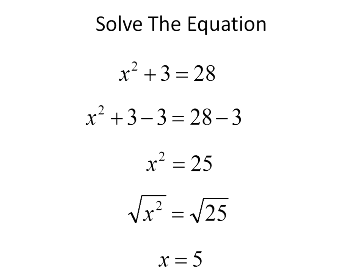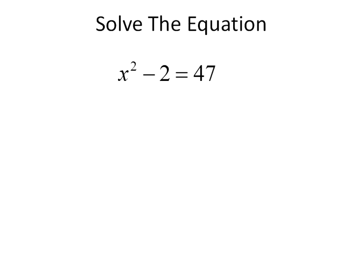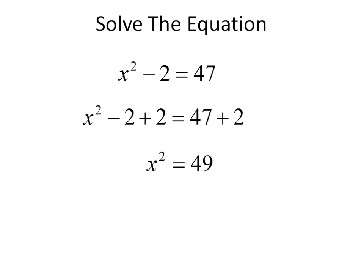In most of the equations today, they'll end up with a nice even number. In real life, you oftentimes end up with a crazy decimal when you're working with square roots, and that's normal to be expected. Let's do one more similar to this: x squared minus 2 is equal to 47. We're going to get rid of the minus 2 first by adding 2 to both sides. That leaves us with x squared on the left, 49 on the right. We'll take the square root of both sides — square root of x squared is x and the square root of 49 is 7. We do have several questions for this lesson so you can pause at any time.